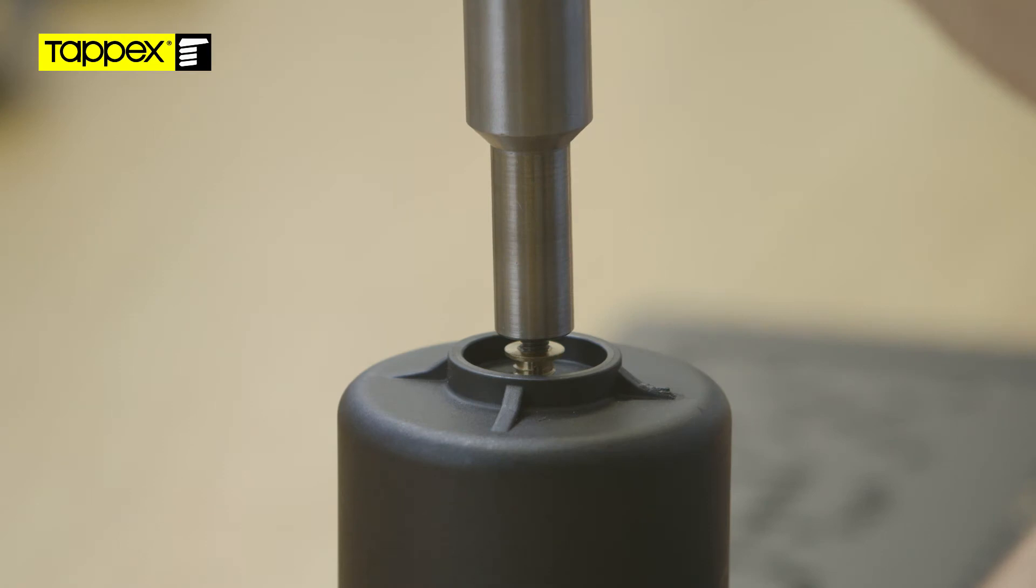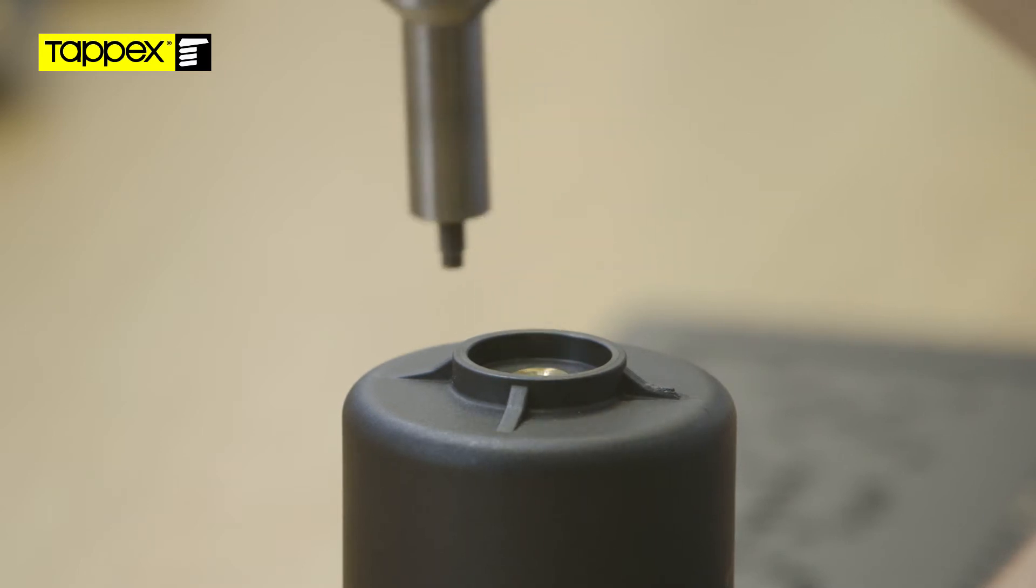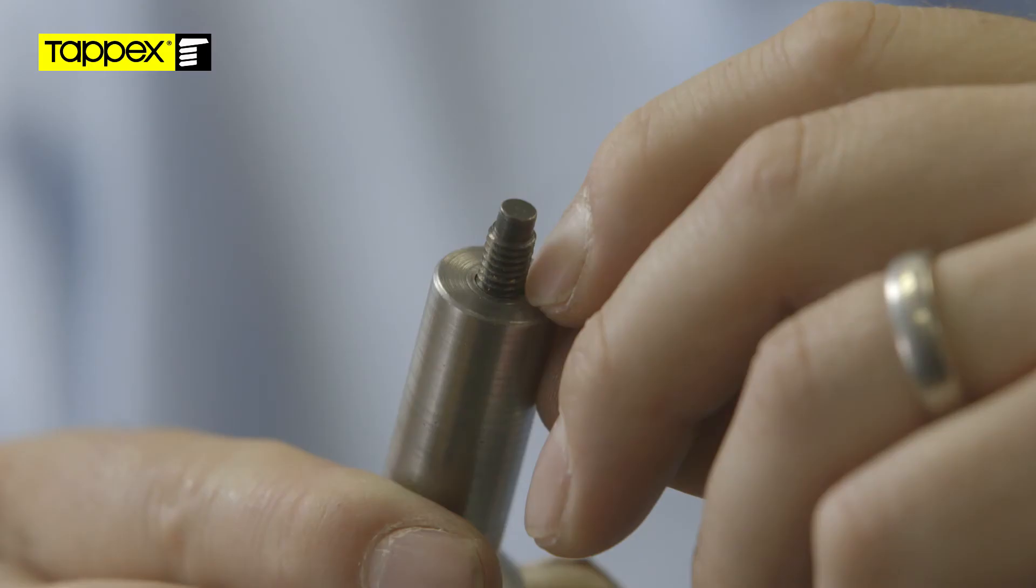As the nose of the production driver comes into contact with the surface of the material, the torque will climb until the preset clutch actuates. The spigot on the nose of the production driver controls the depth of installation.